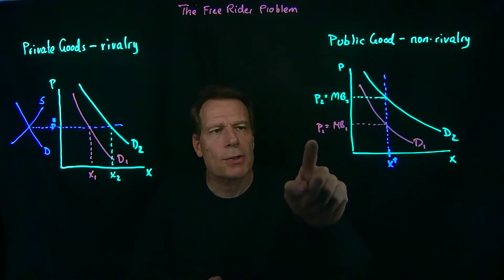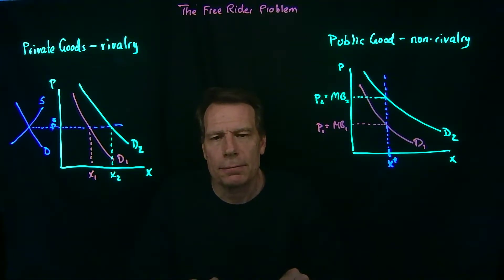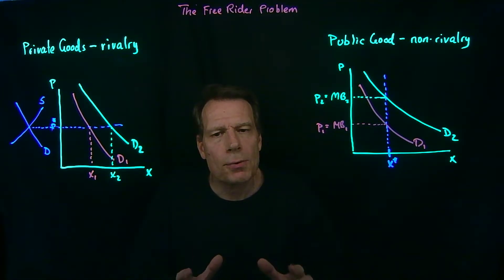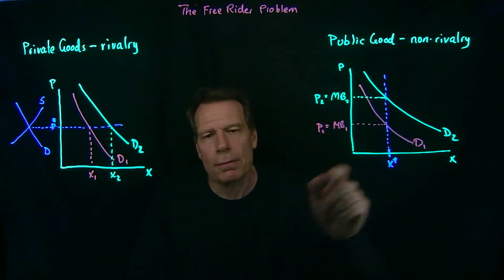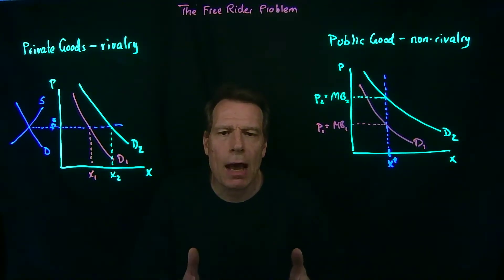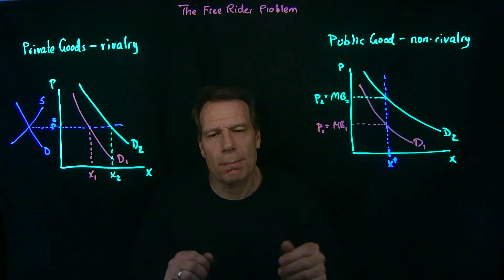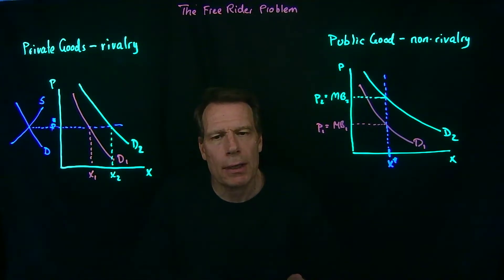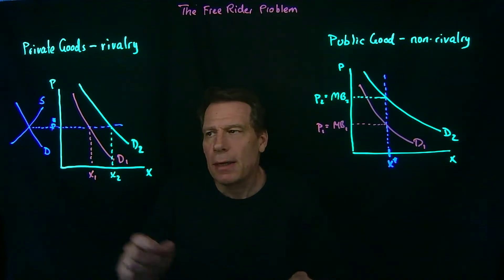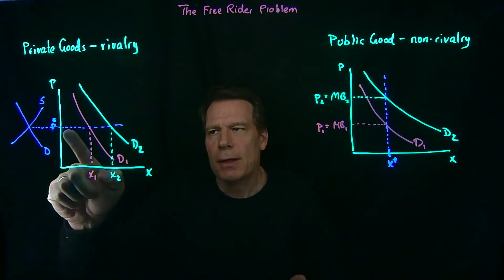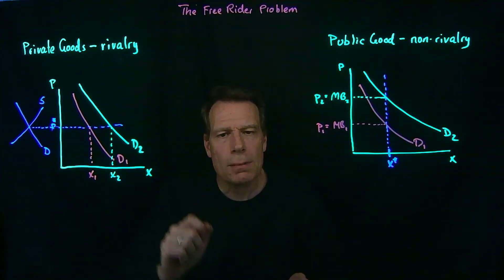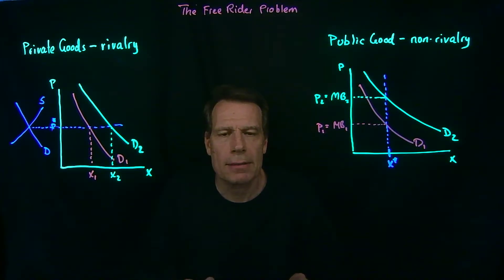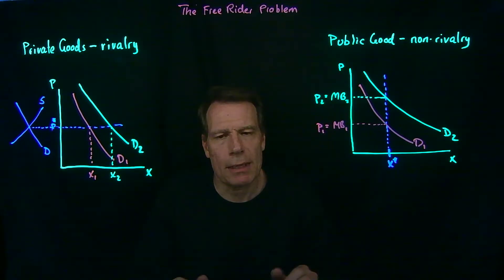We could simply charge each person a price equal to their marginal benefit. But in order to do that, we'd have to know what people's demand curves are. That's not an issue in competitive private goods markets. Nobody has to know other people's demand curves. There's simply a price that emerges in the market, and people just have to know their own demand curve — where their own demand curve crosses that price to set marginal benefit equal to marginal cost. No one has to know anyone else's demand curve.